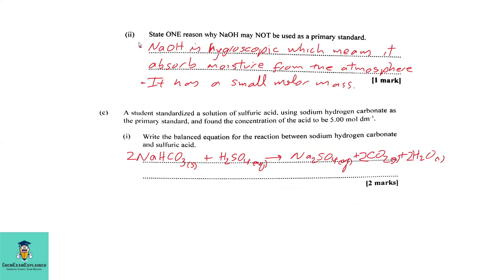Part B2: State one reason why sodium hydroxide may not be used as a primary standard. Sodium hydroxide is hygroscopic, which means it absorbs moisture from the atmosphere. It also has a small molar mass.